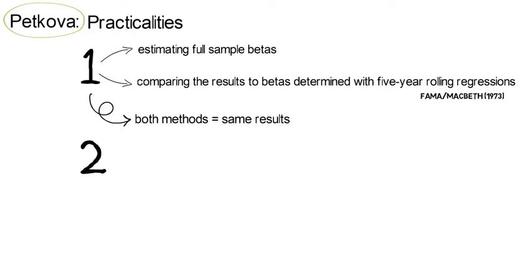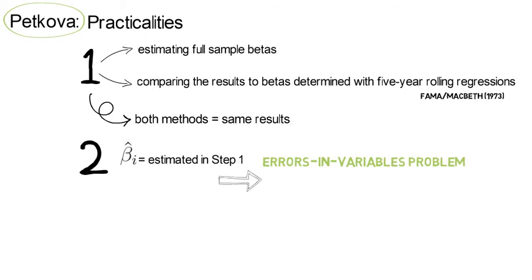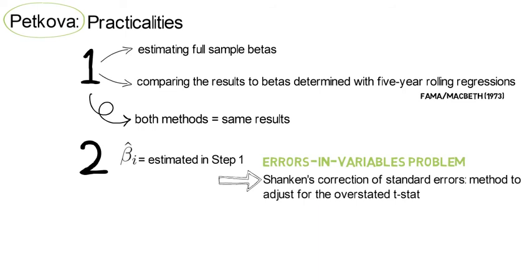Now, the second practicality is that the estimate for beta_i itself is the result of the first stage regression. Therefore, the regressant for step 2 is a typical example for an errors-in-variables problem. Shanken's correction of standard errors is a method to adjust for the otherwise overstated t-statistic.